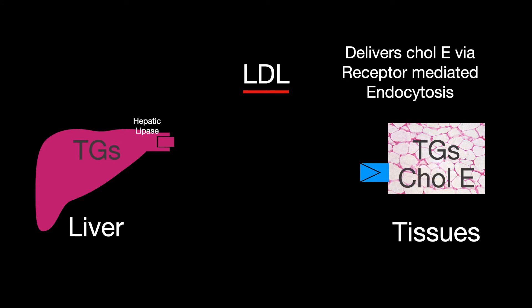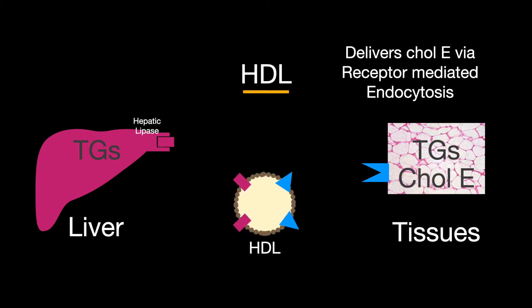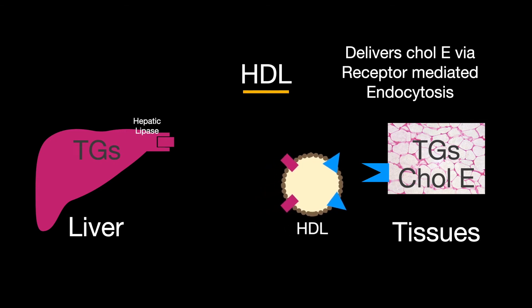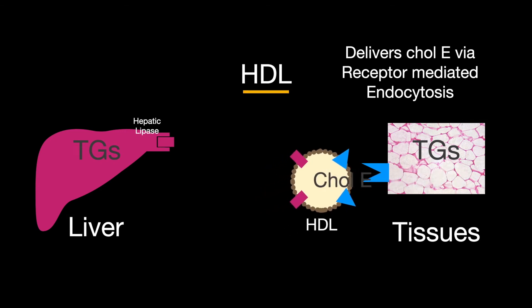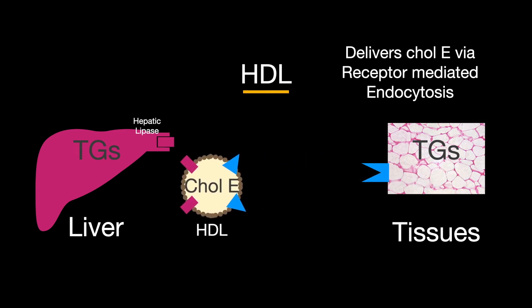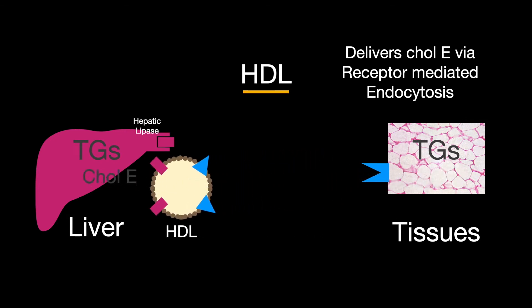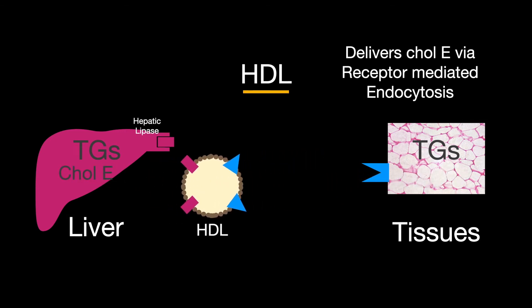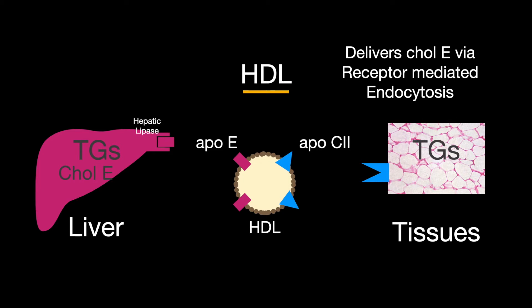High-density lipoproteins transport cholesterol from the tissues to the liver, and also act as a storage for APO-C and APO-E, used by chylomicrons and very low-density lipoproteins.